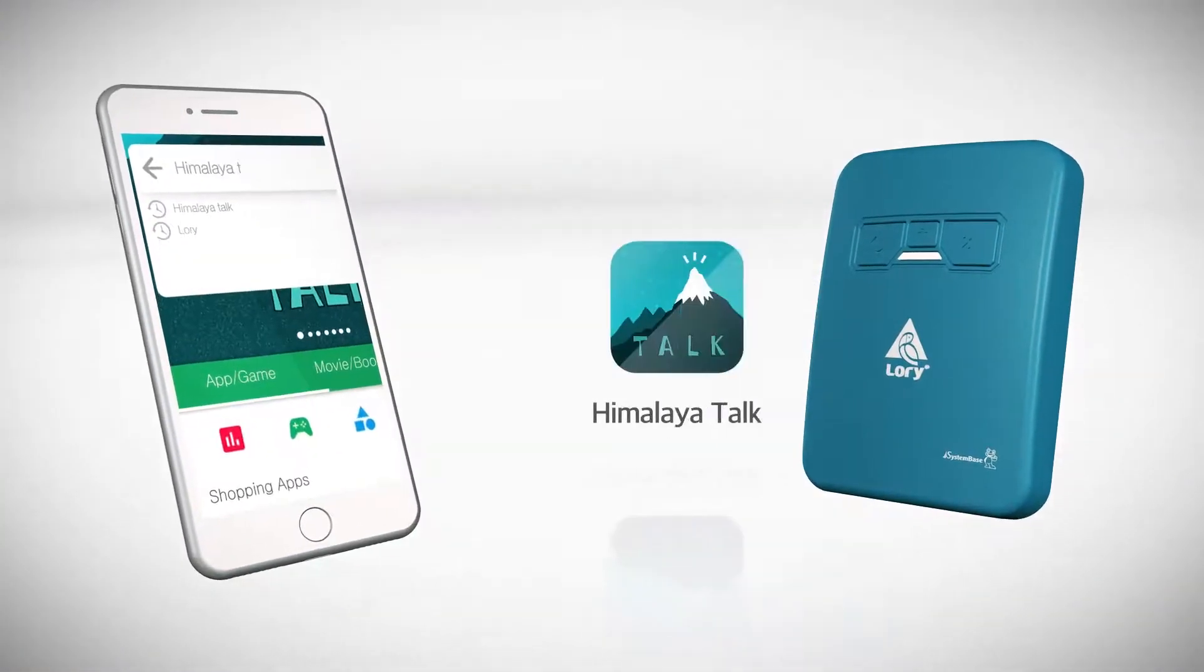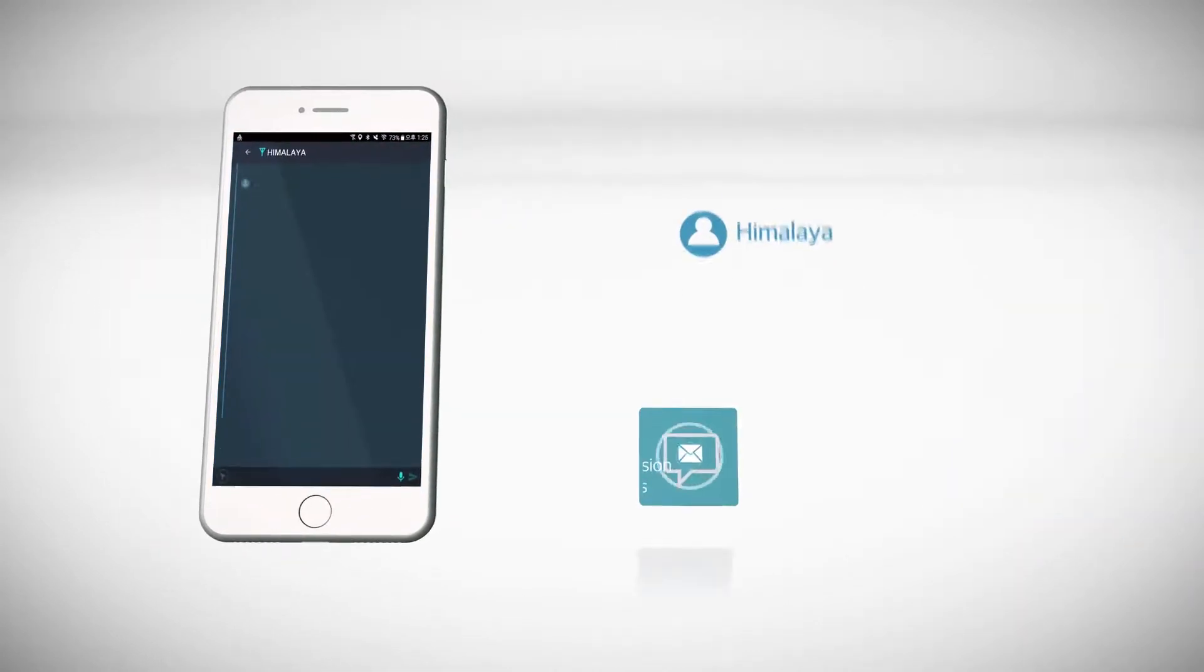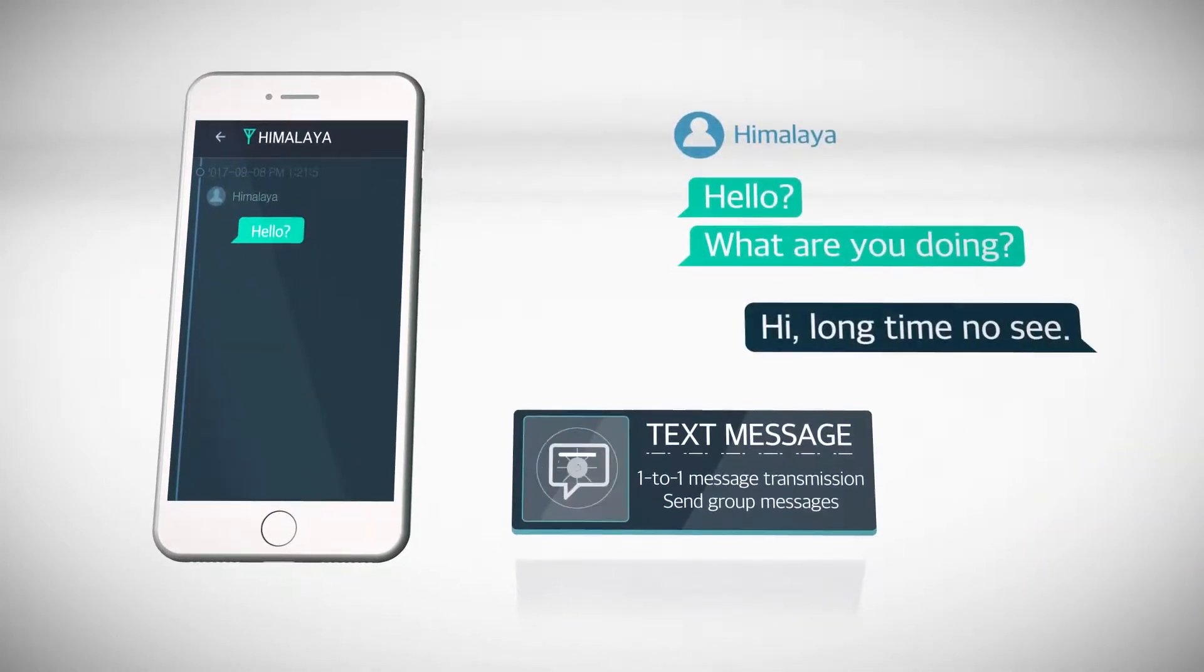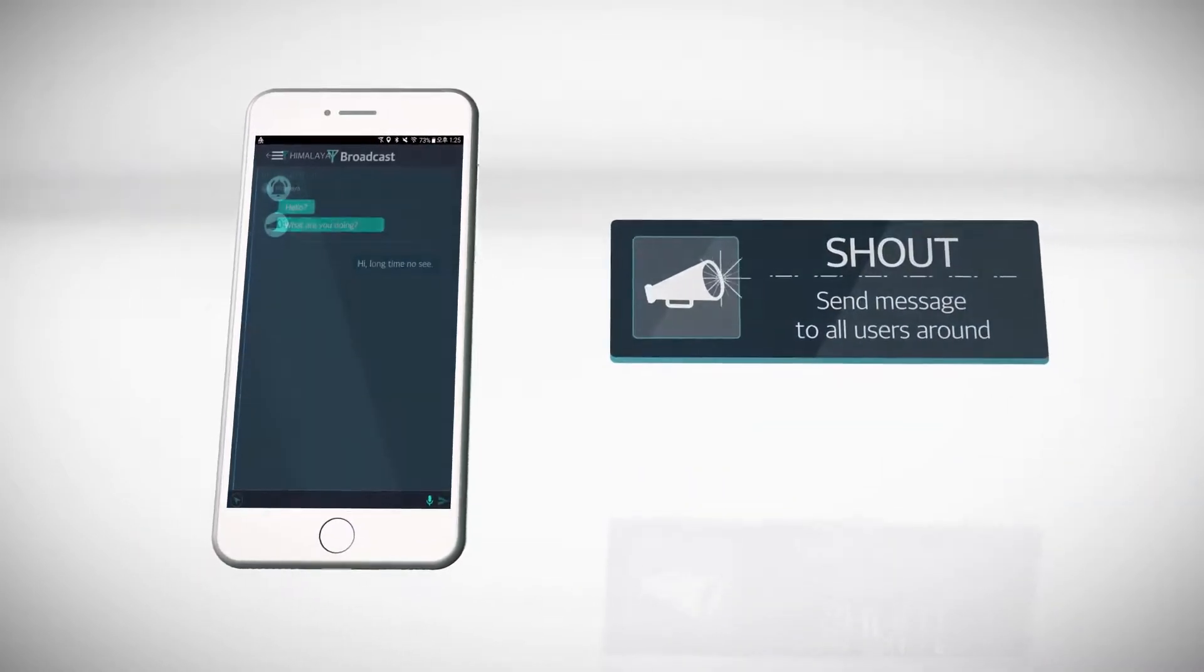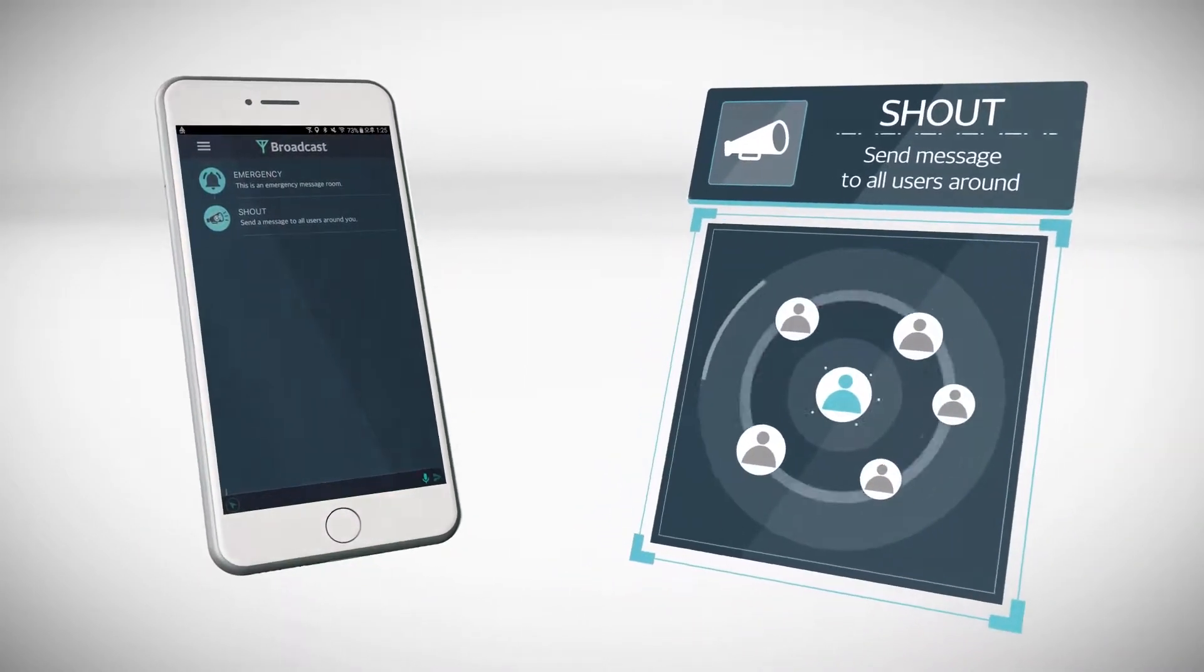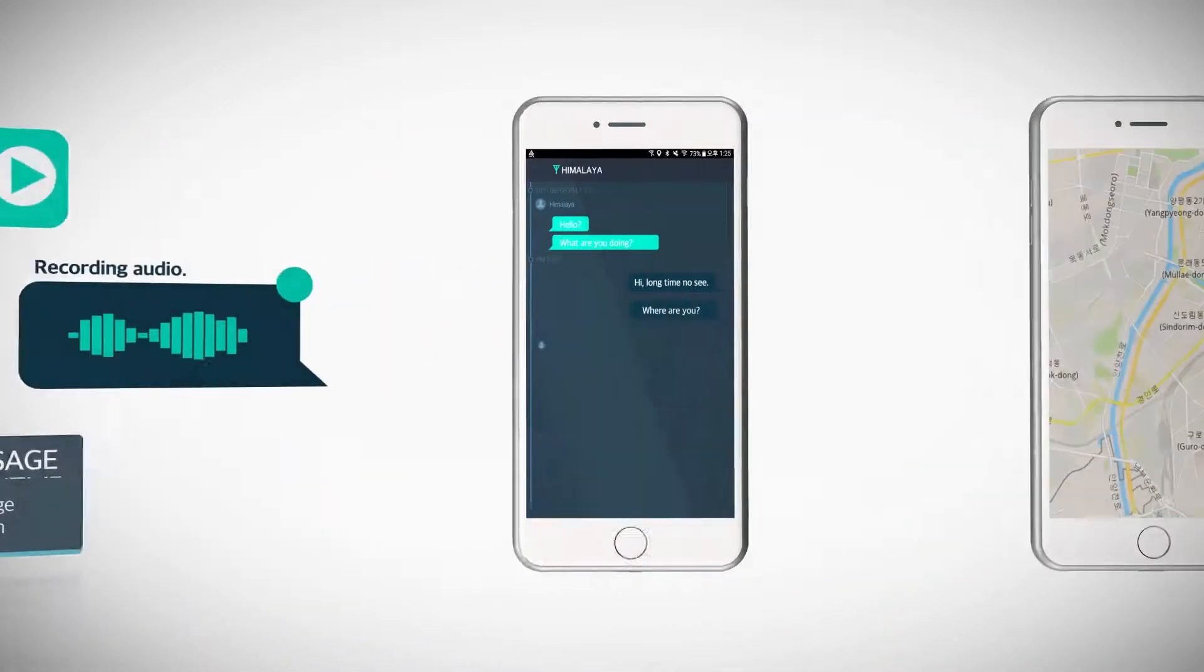LORI 2 usage is simple. Just download the app Himalaya Talk. You can freely send and receive messages with friends, or send them to everyone you know at the same time, using the shout function. You're also able to use voice messages that weren't possible with previous models.